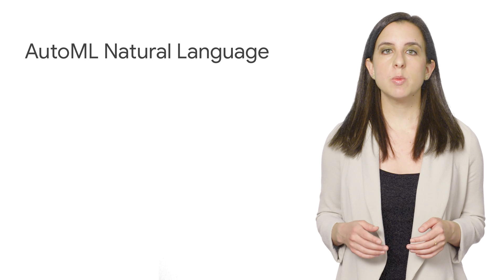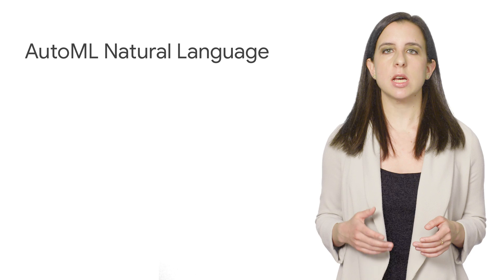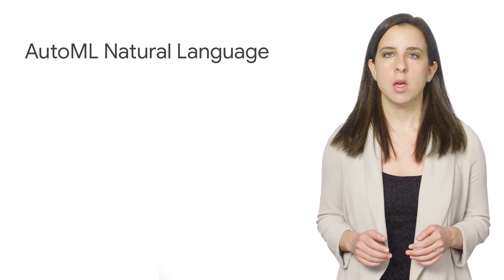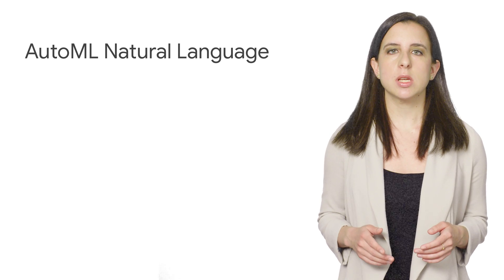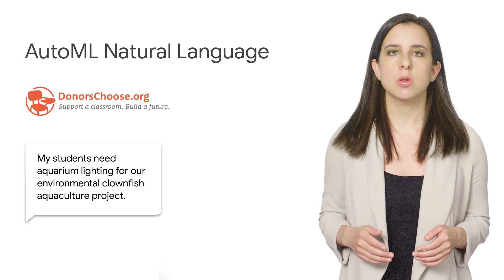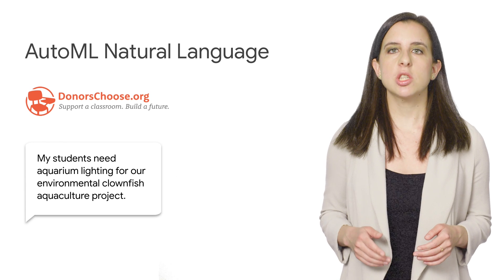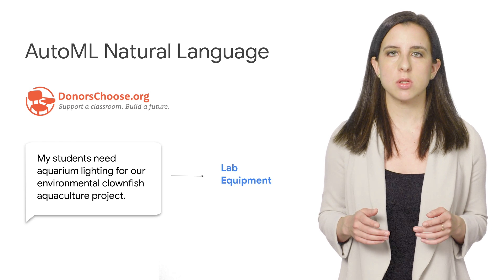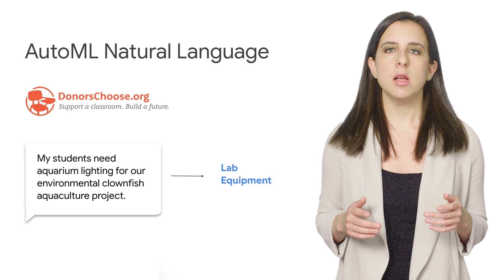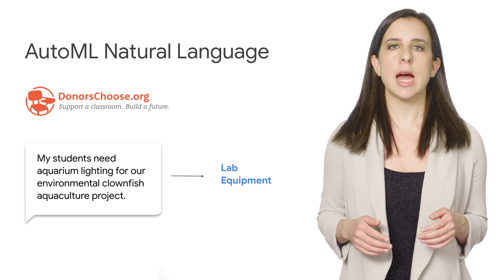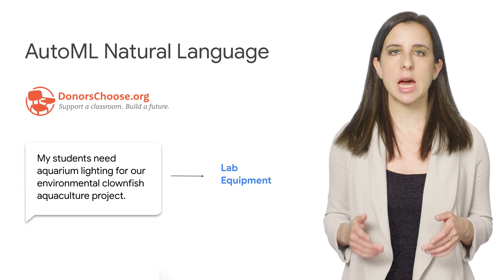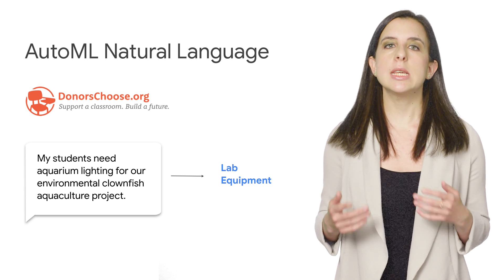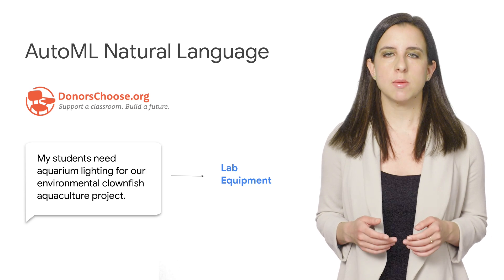AutoML Natural Language lets you build custom text classification models trained on your own text data. I showed a demo using a dataset from the nonprofit DonorsChoose, which matches teachers who need resources for their classroom with interested donors. With AutoML NL, I built a model to categorize need requests from teachers into categories so that donors can easily be matched with projects they're interested in.